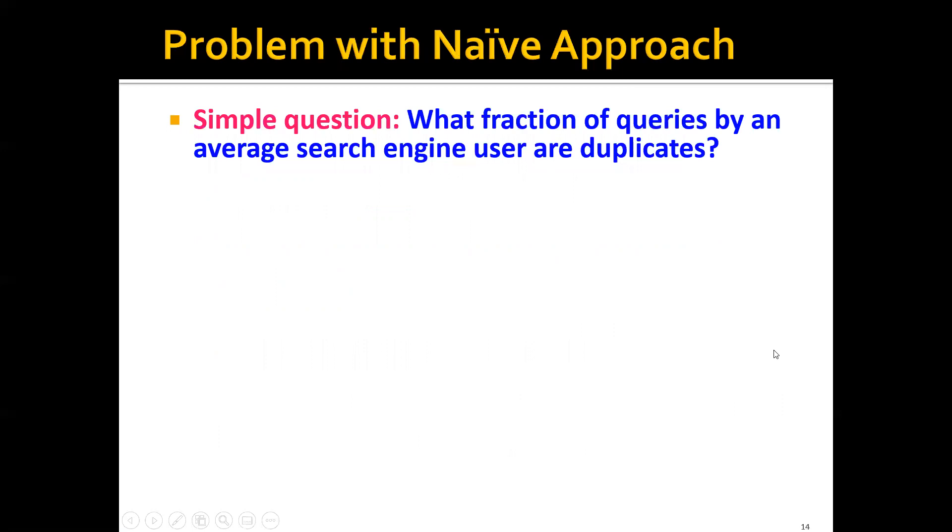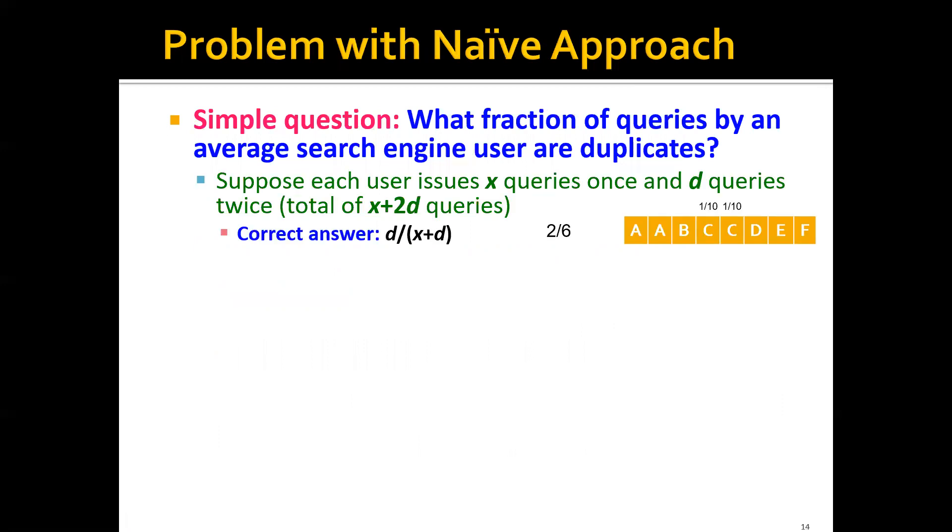Unfortunately, this approach would not work. Remember that the simple question we ask is what fraction of the queries by an average search engine user are duplicates. Let's say that each user issues x queries once and d queries twice. So in total, we have x plus 2d queries. The correct answer is d over x plus d.